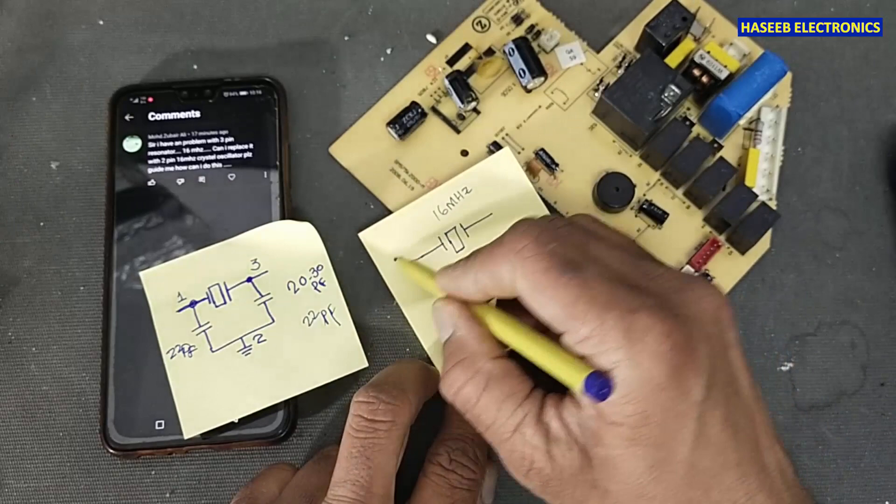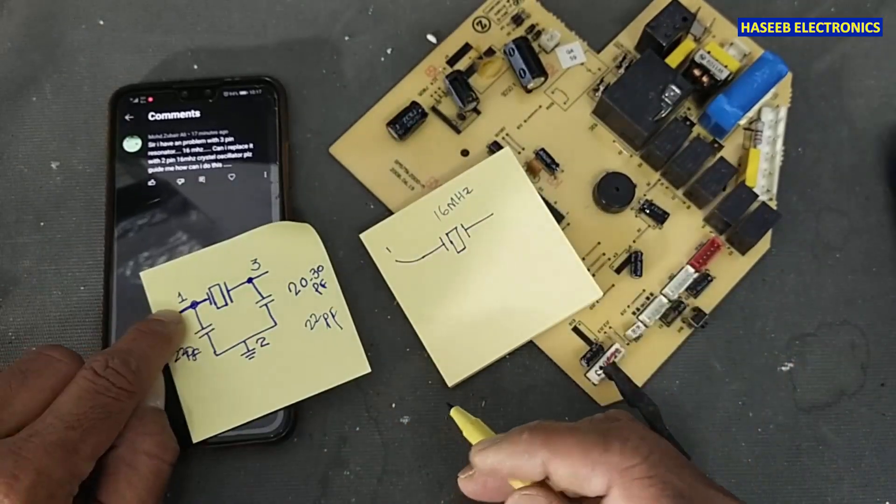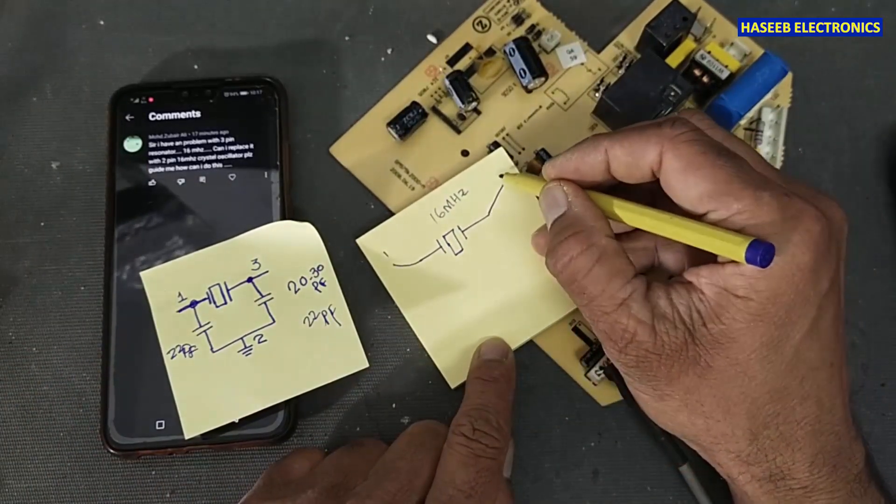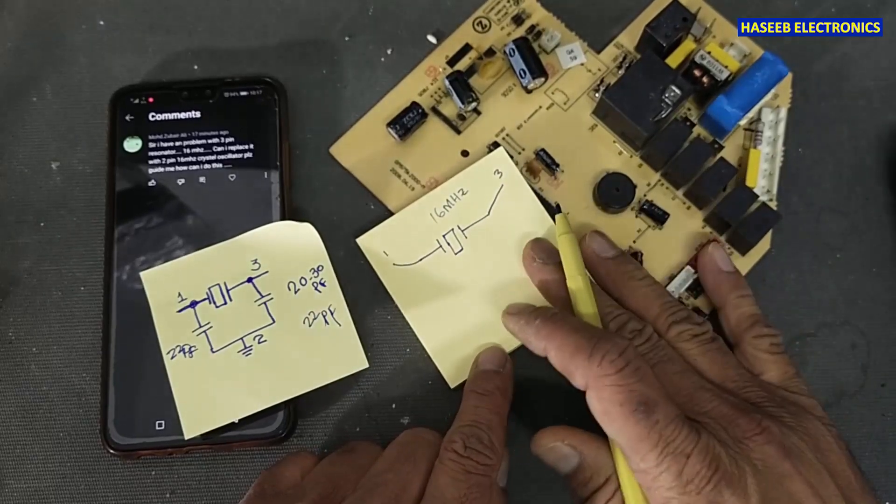Now this will go to pin one here and this end will go to pin three on the PCB, but we will connect one capacitor.